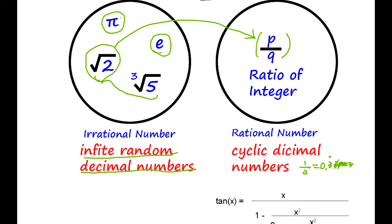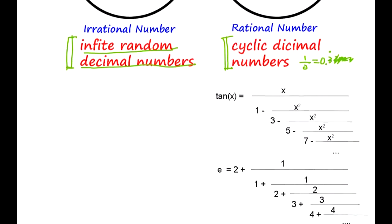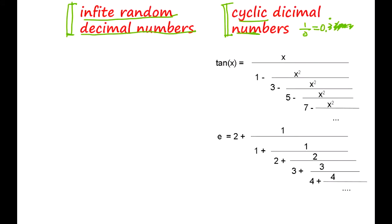Is it true all the irrational numbers will be random sequences of numbers, and rational numbers will always be cyclic decimal numbers or simple decimal numbers? Let's examine this. We're going to prove that cyclic decimal numbers are rational numbers. This is how we prove.